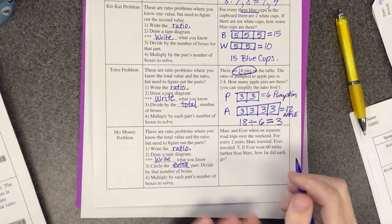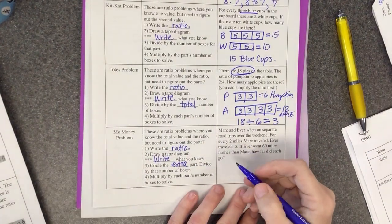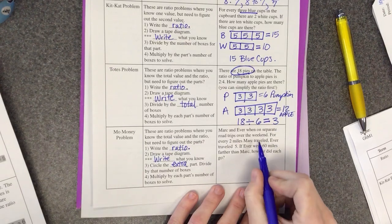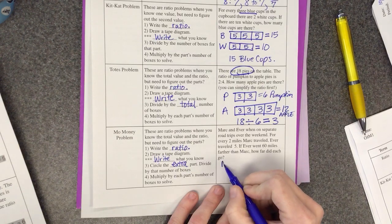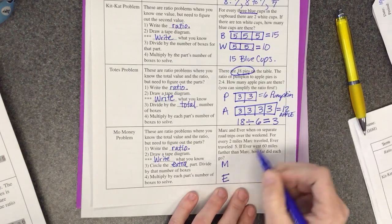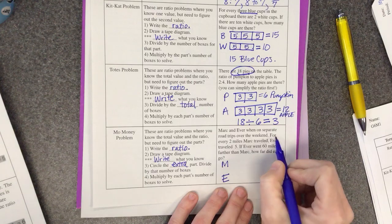Ever, oh the initials spell me, okay. For every two miles Mark traveled, Ever goes five. Beep beep beep, please make sure your boxes line up. Most people have been doing an excellent job at doing that.